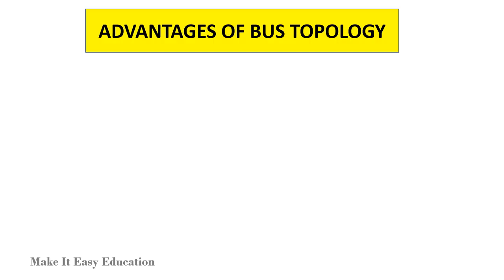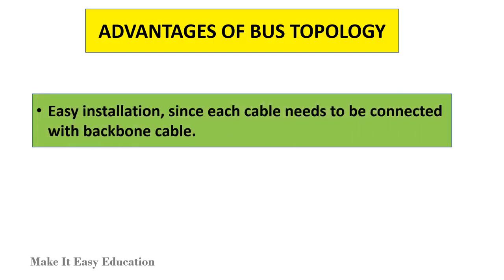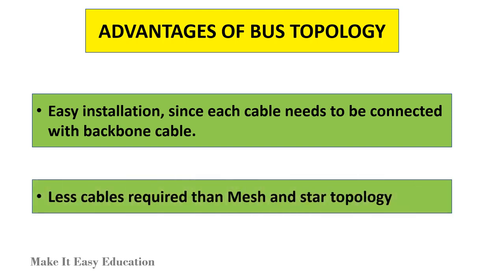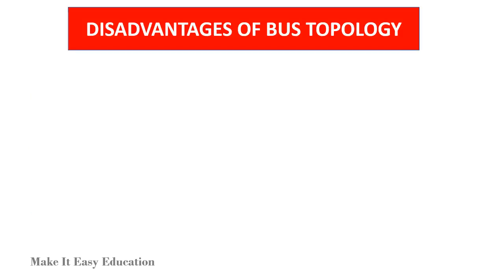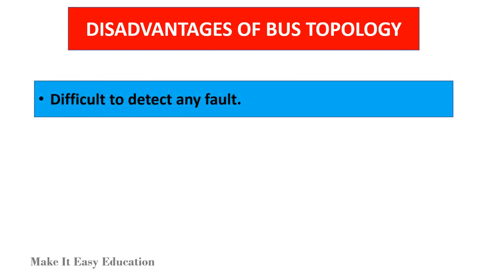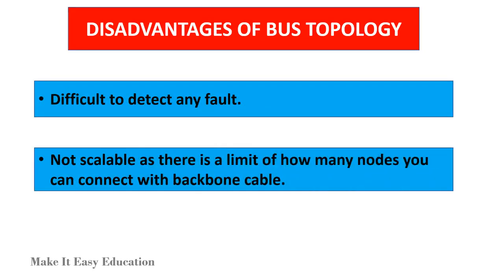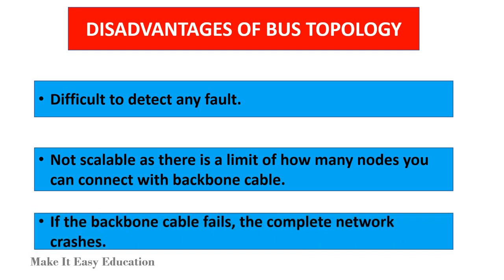Advantages of bus topology: Easy installation, since each cable needs to be connected with the backbone cable. Less cables required than mesh and star topology. Disadvantages of bus topology: Difficult to detect any fault. Not scalable, as there is a limit on how many nodes you can connect with the backbone cable. If the backbone cable fails, the complete network crashes.